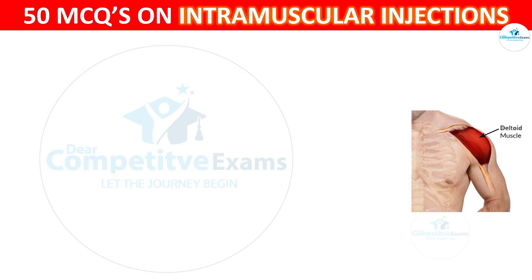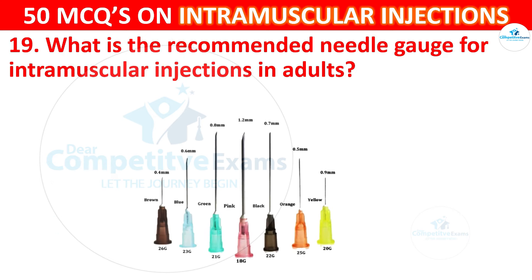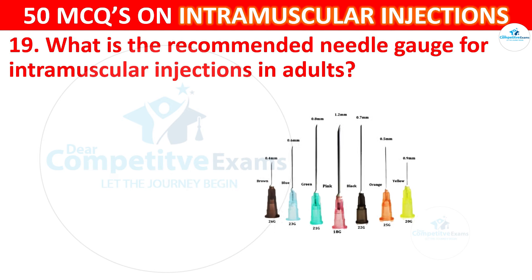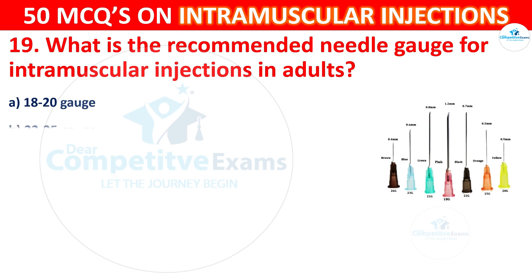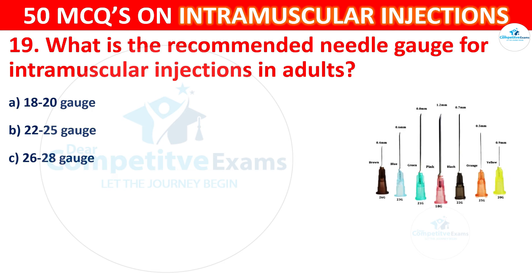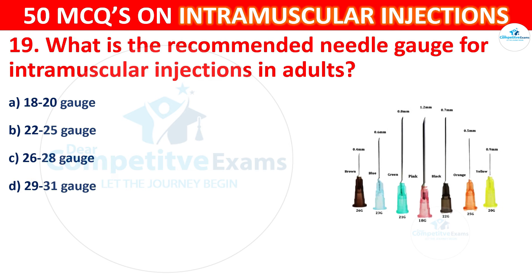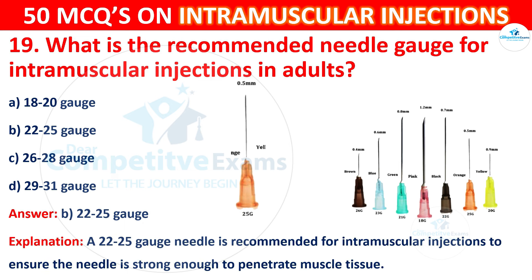Question 19: What is the recommended needle gauge for intramuscular injection in adults? Options are: 18 to 20 gauge, 22 to 25 gauge, 26 to 28 gauge, or 29 to 31 gauge. The correct answer is B, 22 to 25 gauge. A 22 to 25 gauge needle is recommended for intramuscular injections to ensure the needle is strong enough to penetrate muscle tissue.